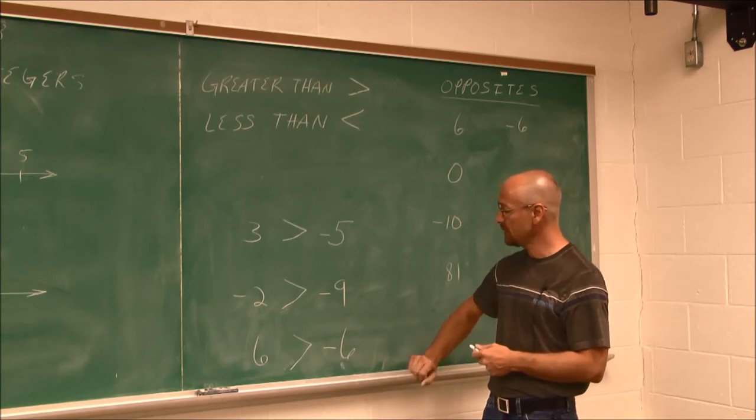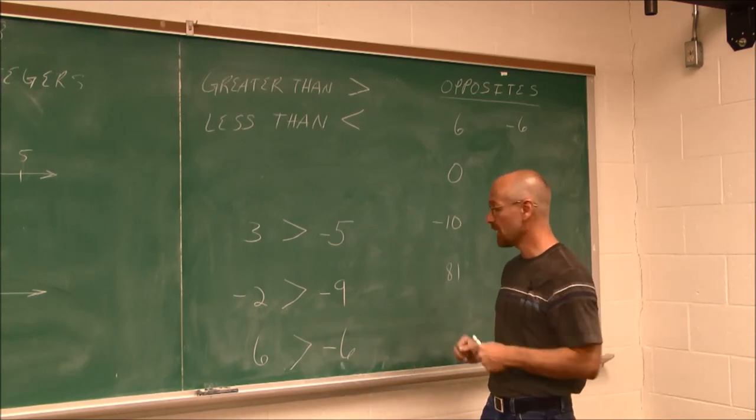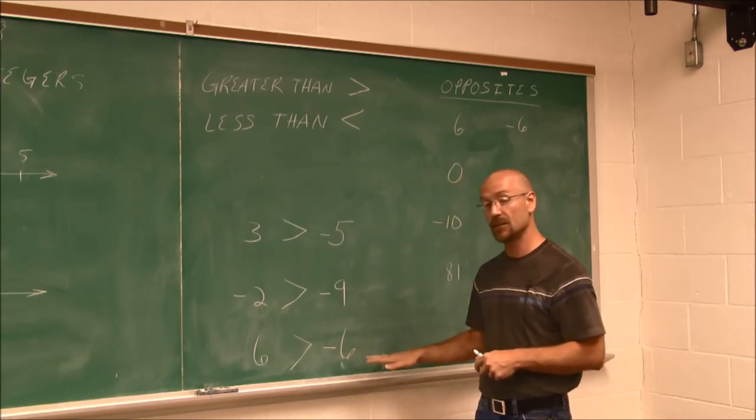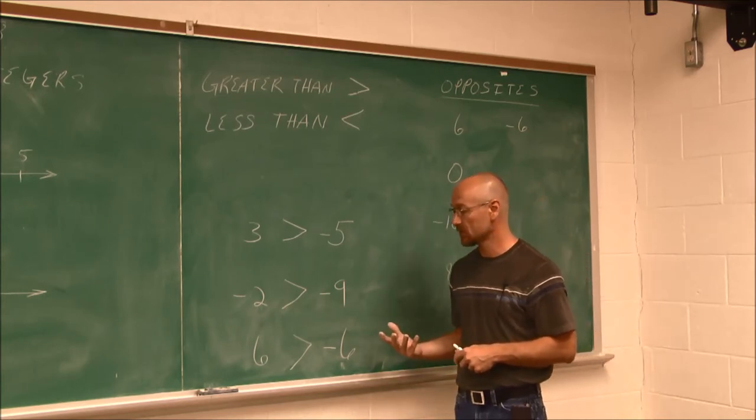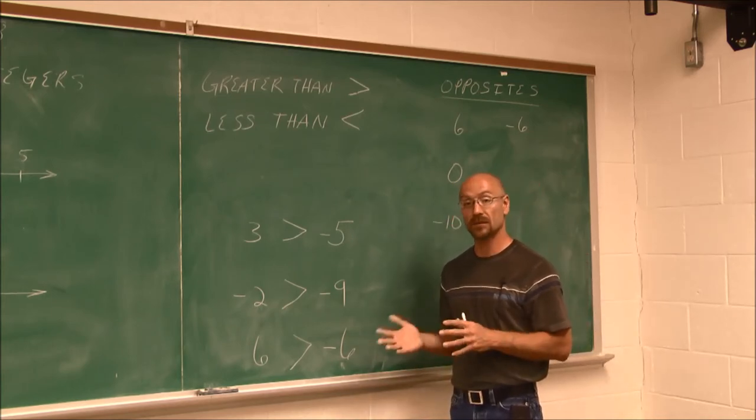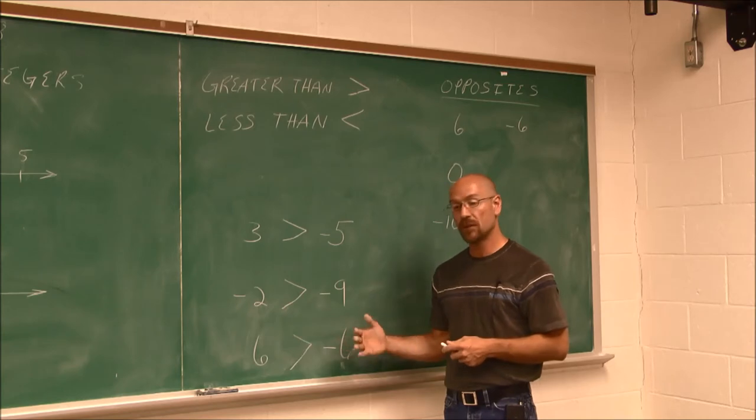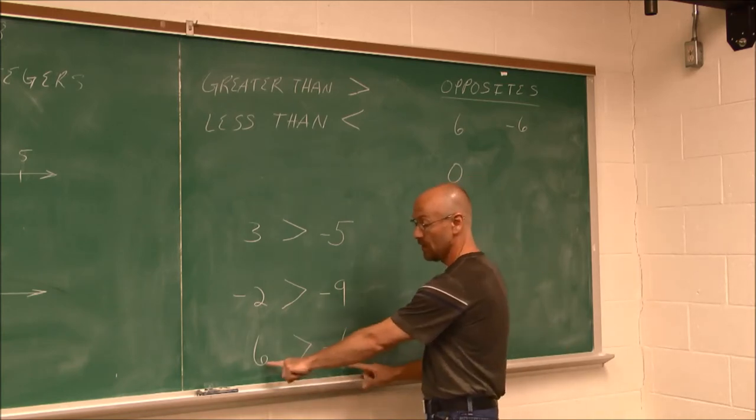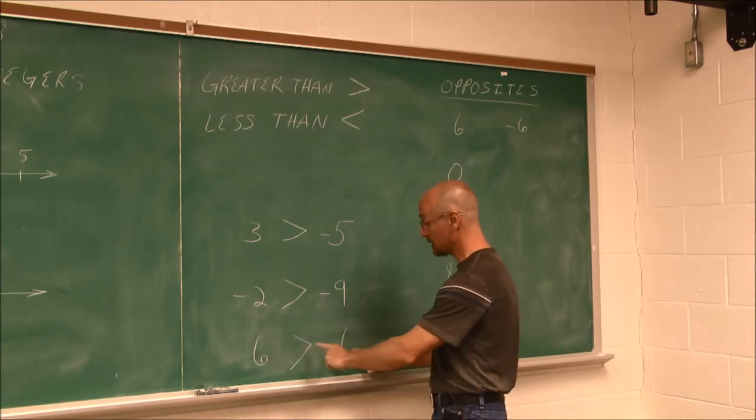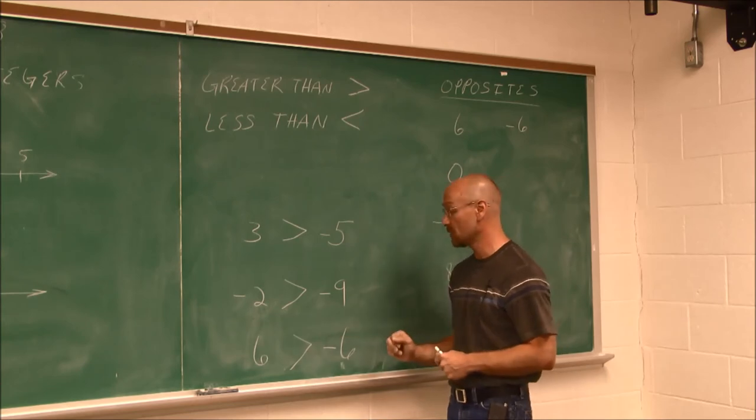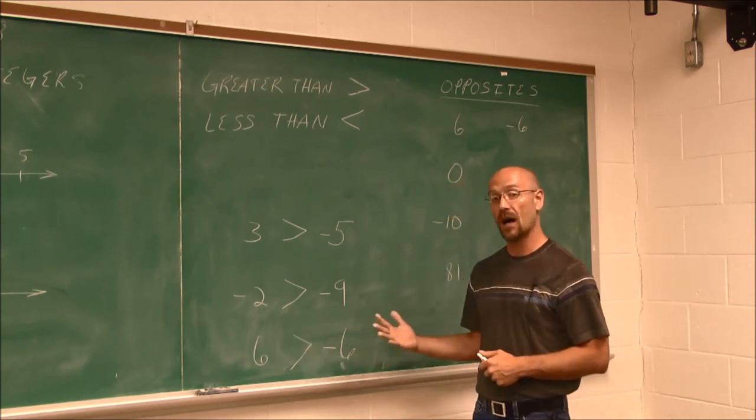But this is a special case that I want to direct your attention to. 6 and negative 6 are what we call opposites, because they are on the opposite side of 0. If they have different signs but are the same numerical value, 6 and 6, one's to the left, one's to the right, these are called opposites.